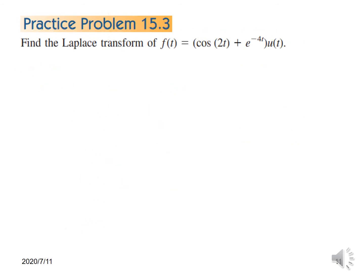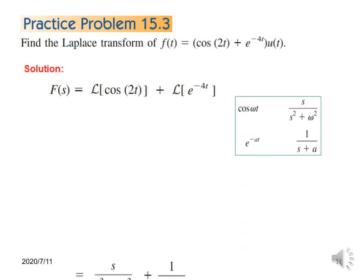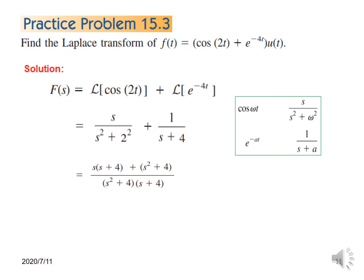The practice problem follows the same technique. F(s) is the Laplace of cos(2t) plus the Laplace of e^(−4t). Taking help from the table and plugging in the values: omega is 2, so we write 2² in the denominator, and A is 4, so we write s + 4. Taking the LCM and simplifying gives the final answer.